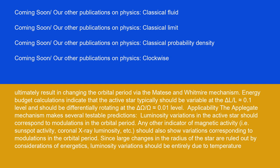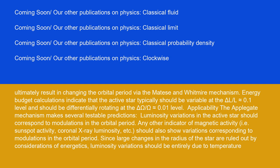Any other indicator of magnetic activity, i.e., sunspot activity, coronal X-ray luminosity, etc., should also show variations corresponding to modulations in the orbital period. Since large changes in the radius of the star are ruled out by considerations of energetics, luminosity variations should be entirely due to temperature variations.